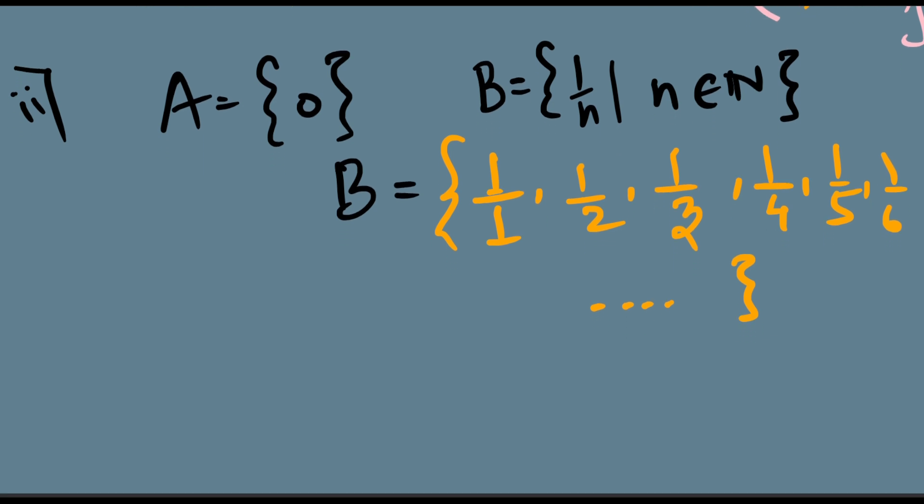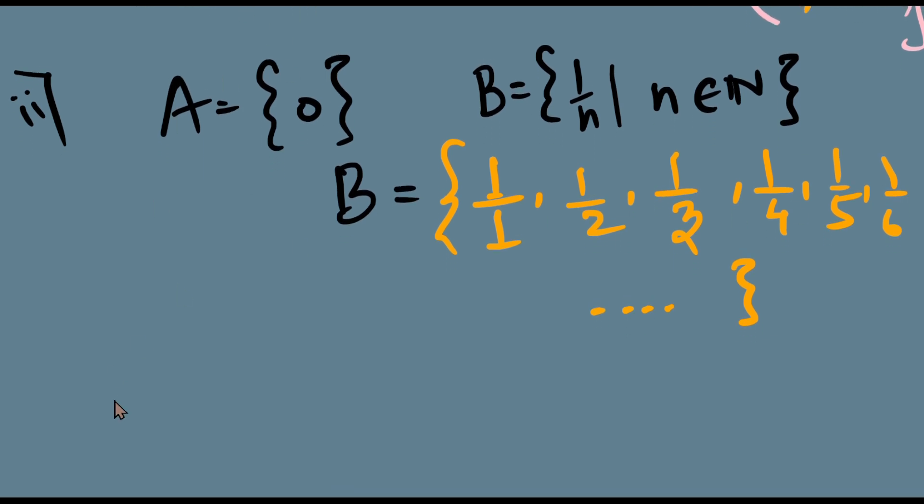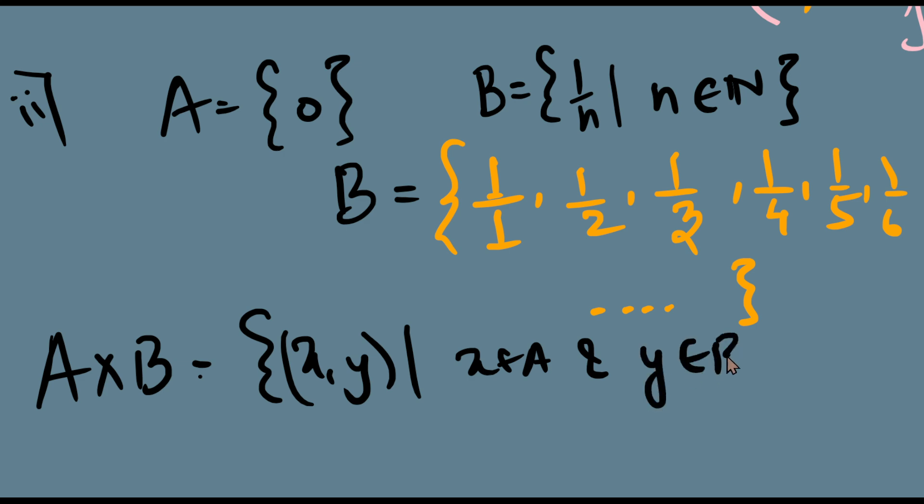But the definition of Cartesian product will still hold. So A cross B will still be defined as the set of all (x,y) such that x belongs to A and y belongs to B. So how will the Cartesian product actually look like? Let me list it in a new page.